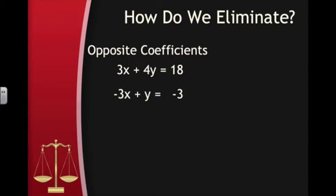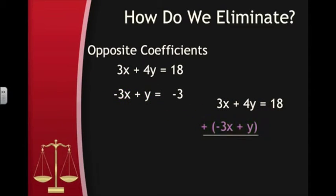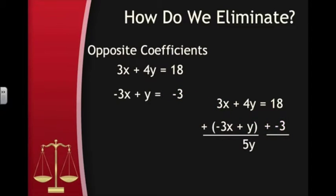When we add the equations together this time, notice the x's on the left side of the two equations. One has a plus 3x and the other has a minus 3x — opposite coefficients. This way, when we add them together, the x's cancel out to 0, leaving only a 5y on the left side. Adding the right sides together gives us 18 minus 3, which is 15.